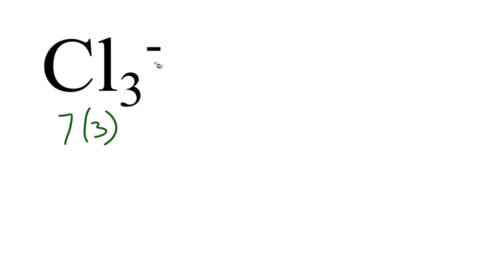And then this negative up here, it means we have an additional negative charge, an additional valence electron. We're going to just add one, since it's an additional electron, plus one. And that means that seven times three is 21, plus one, 22 total valence electrons for the Cl3 minus Lewis structure.